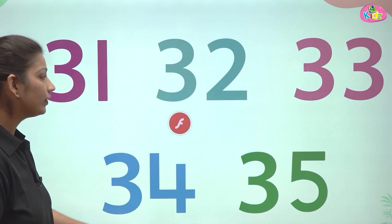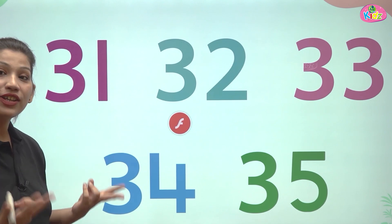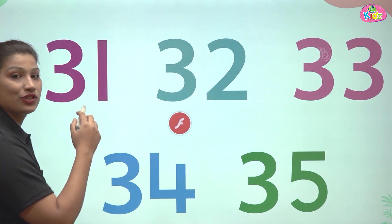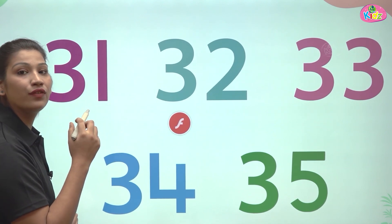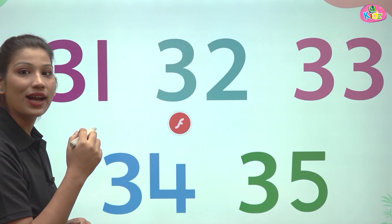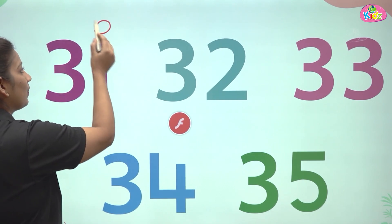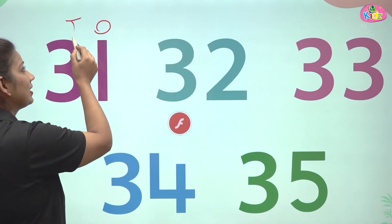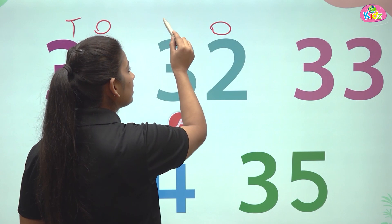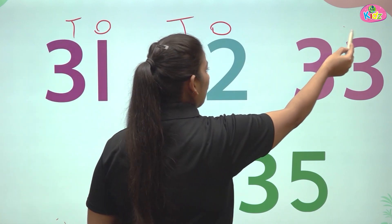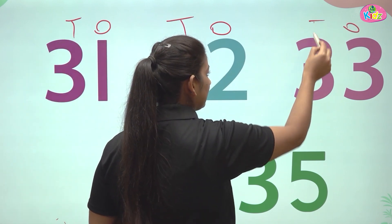All of these numbers are two-digit numbers. In a two-digit number, we have two places: ones and tens. This is the ones position, this is the tens position — ones position and tens position. Ones, tens.